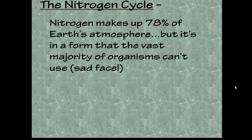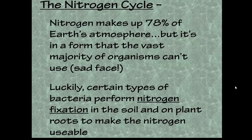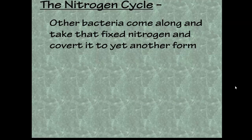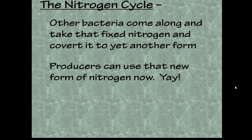The last cycle is the nitrogen cycle. Nitrogen makes up about 78% of Earth's atmosphere, but it's in a form that the vast majority of organisms can't use. Luckily, different types of bacteria perform a process called nitrogen fixation in the soil and on plant roots, making the nitrogen usable. Bacteria are actually very helpful — they make it possible for us to use nitrogen. Then other bacteria convert that fixed nitrogen into yet another form that producers like plants and algae can use.